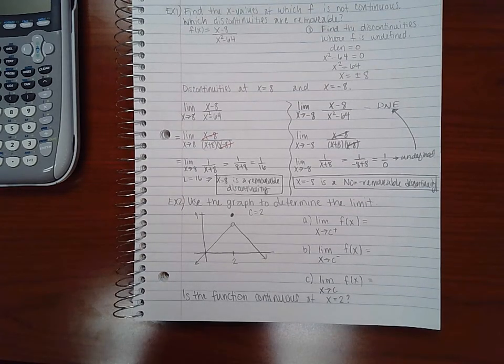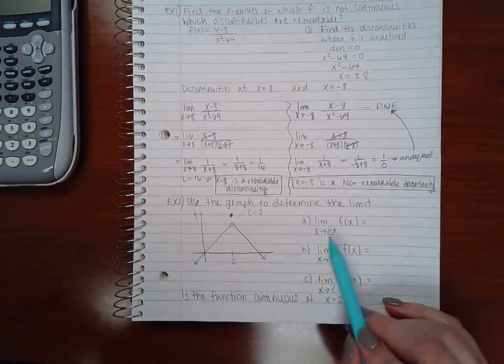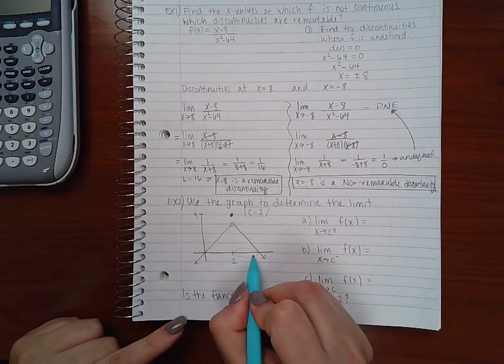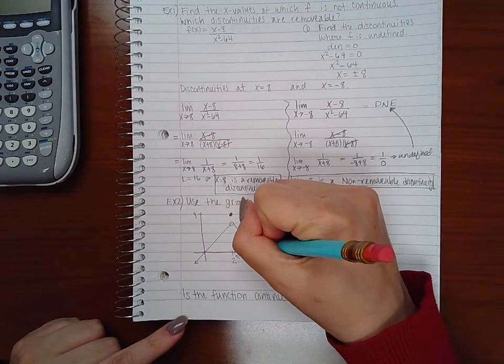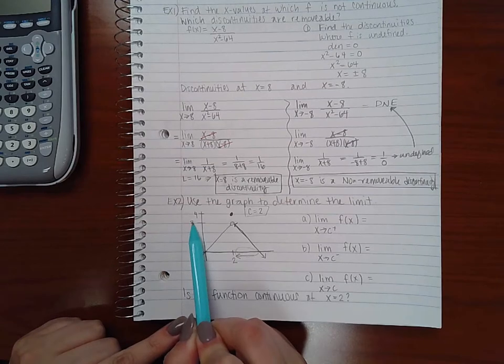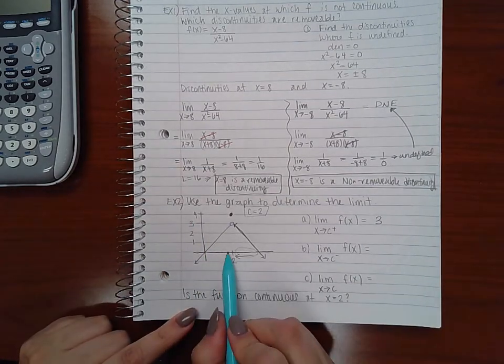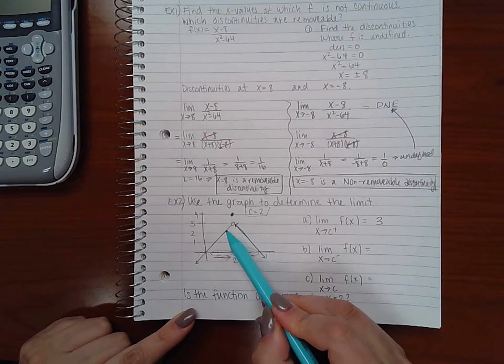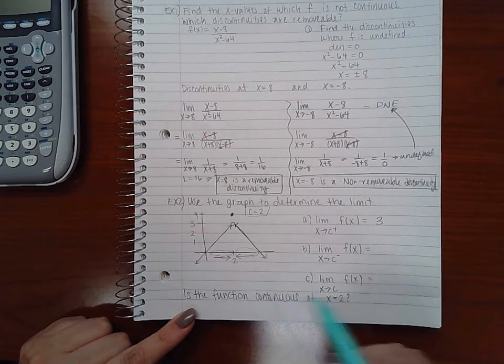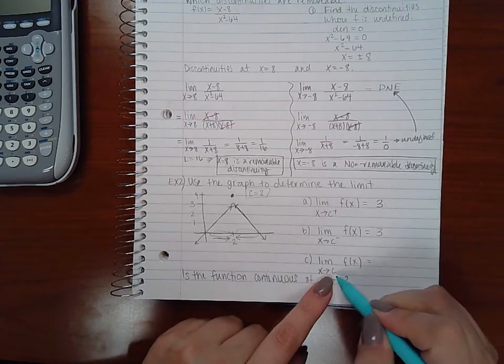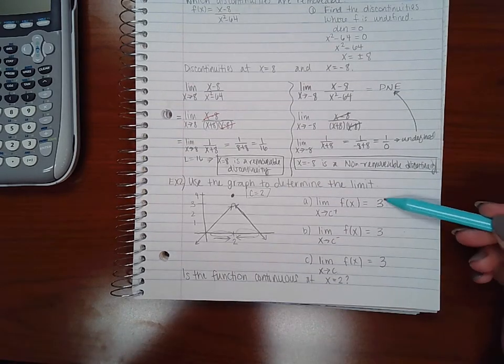Next example is using a graph. It says use the graph to determine the limit. So here's part a, find the limit of the function as x approaches c from the right, and it's telling me c equals 2. If I approach 2 from the right, my graph is going up to this particular y value, that y value is 3. As I look at what's happening to the left of 2, if I approach 2 from the left, I'm still approaching that same y value 3. And therefore because these two are the same, my limit at c will also be 3.